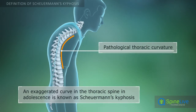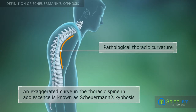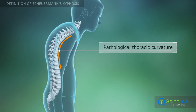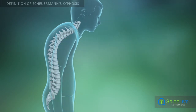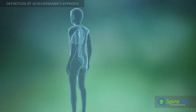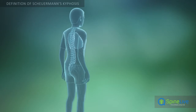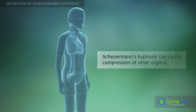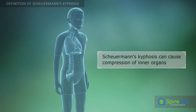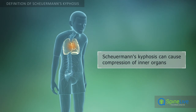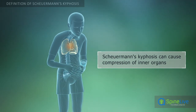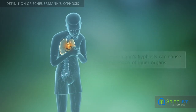Scheuermann's kyphosis occurs when the curve in the thoracic spine exceeds 50 degrees. Sometimes Scheuermann's kyphosis can cause compression of the internal organs and disrupt their function. In severe cases, kyphosis can affect the lungs, heart, nerves, and other tissues.